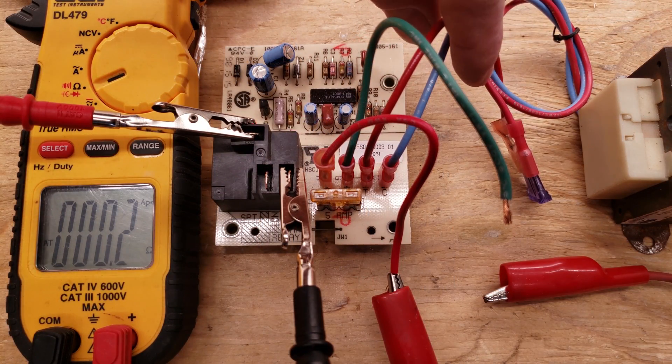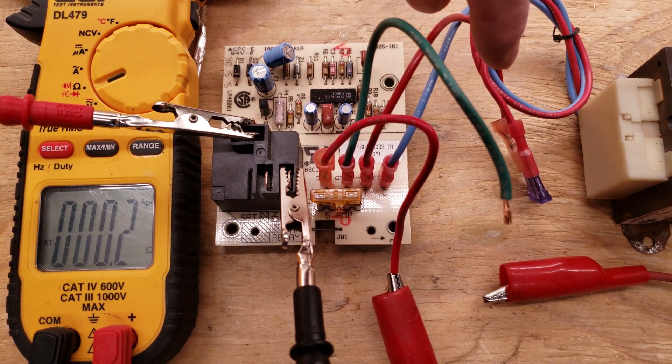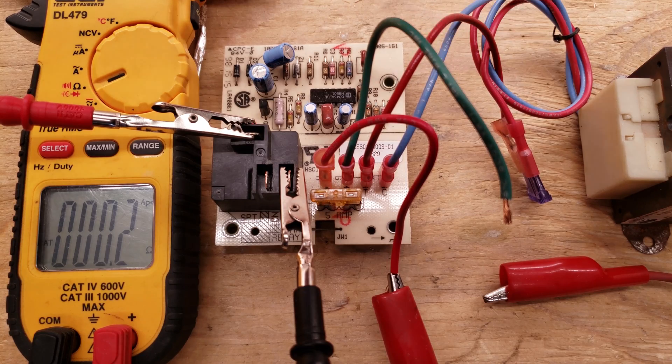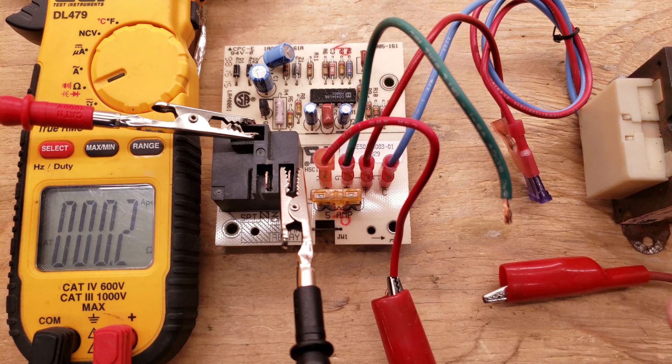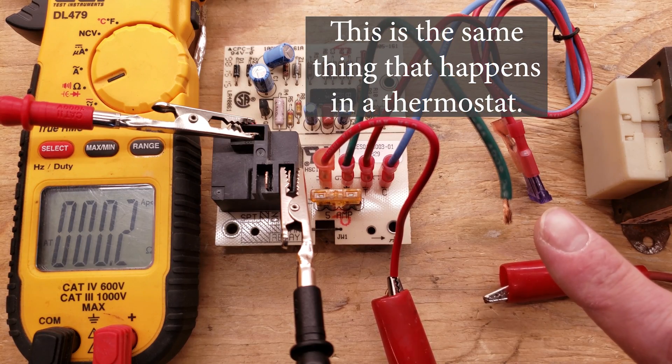So right now we're sending 24 volts from our transformer to the control board, and now we have 24 volts coming out of the R terminal. What we're going to do is alligator jump it to that G wire.